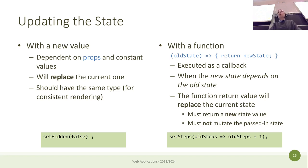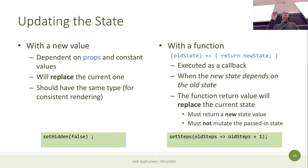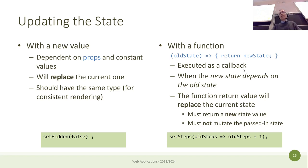When you pass a function to the setter, React understands it's a callback rather than a direct value. It runs the function passing the old value as the parameter and uses the return value as the new state. This is useful when the new state depends on the old state — the return value replaces the current state.